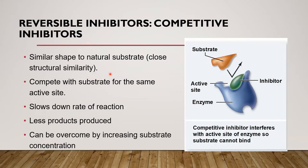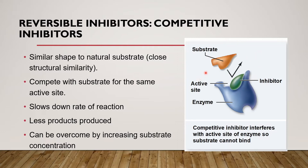The reversible inhibitors can be either competitive or non-competitive. Let's take a look at competitive inhibitors. These competitive inhibitors have a similar shape to the natural substrate — they show close structural similarity. They will compete with the substrate for the same active site. Here, the inhibitor (shown in green) is binding to the active site of the enzyme. You can see that this competitive inhibitor is structurally similar to the normal substrate.